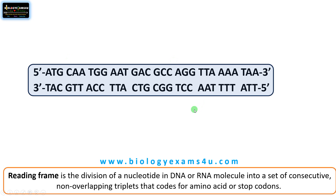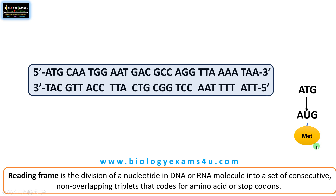Let's take this sequence as an example. In this sequence, ATG, as we know, upon transcription, it becomes AUG in RNA — in place of thymine is uracil — and this AUG codes for amino acid methionine, the starting amino acid in a polypeptide. Then this TAA is a stop codon that becomes UAA, which is a stop codon and doesn't code for any amino acid.